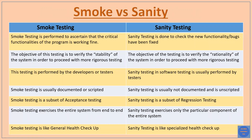Now the differences between smoke and sanity testing. Smoke testing is performed to ascertain that the critical functionalities of the program are working. Sanity testing is done to check new functionality, bugs, and behavior. The objective of smoke testing is to verify the stability of the system to proceed with rigorous testing, while sanity testing focuses on verifying the rationality of the system. Smoke testing is performed by developers or testers; sanity testing is usually performed by testers only. Smoke testing is documented and scripted; sanity testing is usually not documented and unscripted.